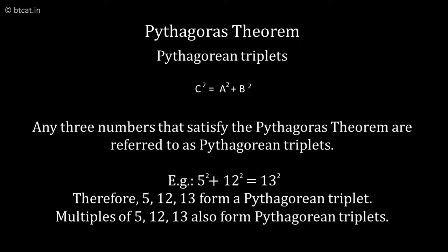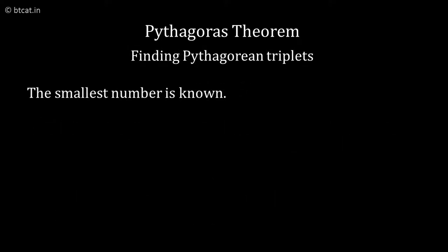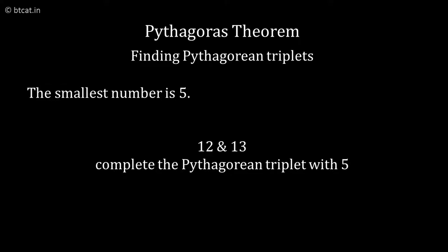I would like to tell you an amazing trick to find the triplet given the smallest number. Let's say my smallest number is 5. I want to find the corresponding triplet related to 5. The trick is: do the square of 5, we get 25, and now do half of it, we get 12.5. Take the numbers near to integers of 12.5, which are 12 and 13. So the triplet corresponding to 5 is 5, 12, 13.